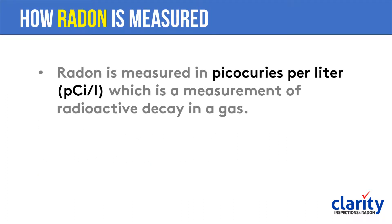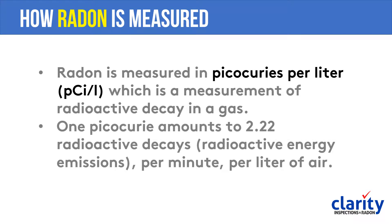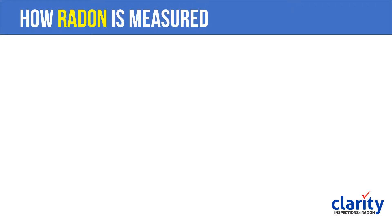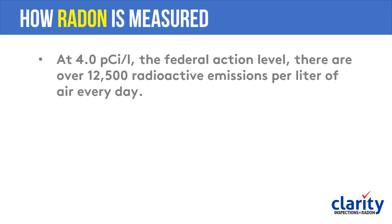Radon is measured in what's called picocuries per liter, which is a measurement of radioactive decay in a gas. One picocurie per liter amounts to 2.22 radioactive decays, or energy emissions, per minute per liter of air. At four picocuries per liter — the federal action level — there are over 12,500 radioactive emissions per liter of air every single day.